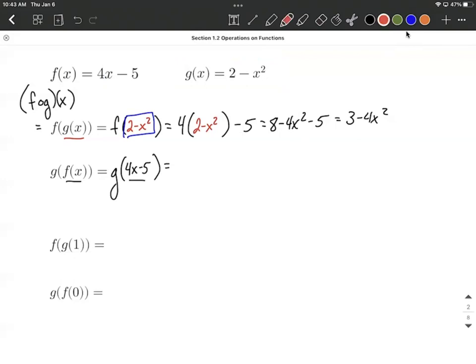From here, whatever is being plugged into our function, the 4x minus 5 is replacing the x from the original definition of g of x. So it needs to replace the x on the right hand side as well. So this is going to give us 2 minus whatever replaces x needs to be squared. So I'm going to put 4x minus 5 in that spot.